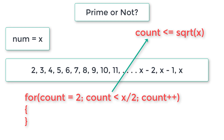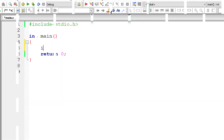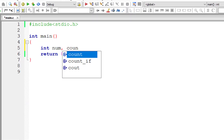Or we can further reduce the number of iterations by writing count is less than or equal to square root of x. We need to check from 2 to square root of the number entered by the user. If x is perfectly divisible by any number in that range, then it's not a prime number.